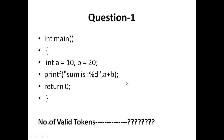Now I am going to give a question to you all. Here is a user program with the int main function. We are taking two variables: a equals 10, b equals 20. And it has to print — printf: 'sum is %d', a plus b — semicolon. It should return 0, and ends with a brace. Now tell me: how many valid tokens are in this program? I am giving two minutes.